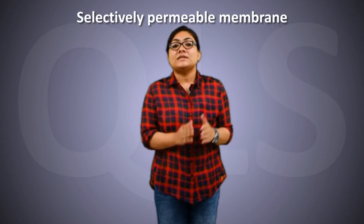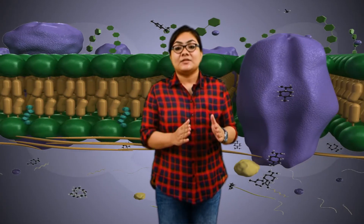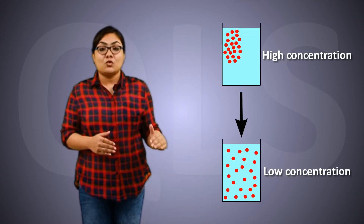We use the word 'selectively' — agar hum 'selectively' ko kaatein toh humein word milega 'select' — matlab kisi cheez ko select karna. Vaise hi humari cell membrane allows some substances like molecules or ions to enter the cell. Now the question arises: how does the movement of substances take place across the membrane?